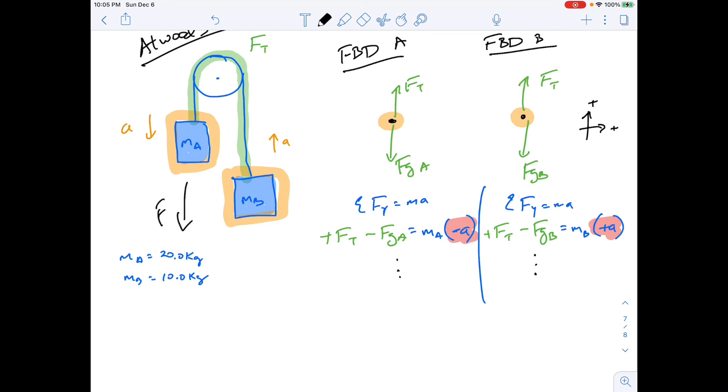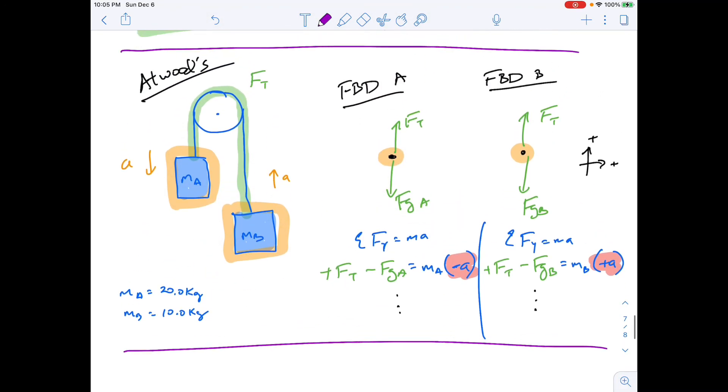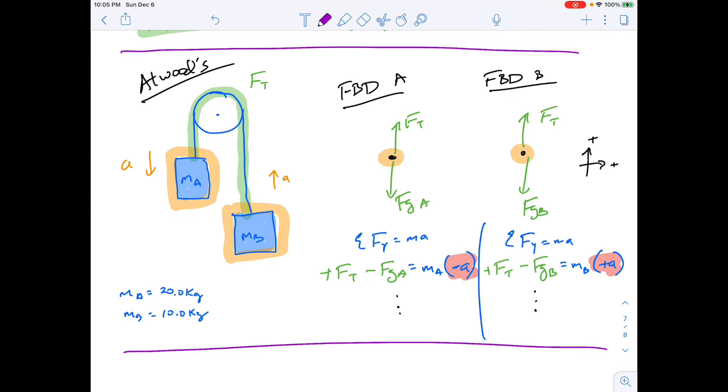Unless there is some outside force helping this scenario, acceleration should be less than gravitation. Because as this thing tries to fall, this thing is trying to hold it back because of inertia. So acceleration had better be between zero meters per second squared and 9.8 meters per second squared. So I hope that all makes sense. And you're going to have some problems to explore.